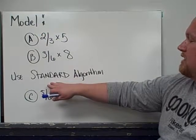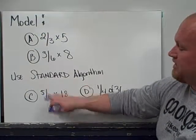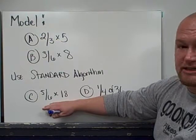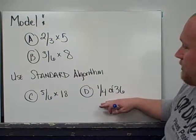After that, I'd like you to use a standard algorithm to multiply your numerators and denominators and solve five-sixths times eighteen and one-fourth of thirty-six.